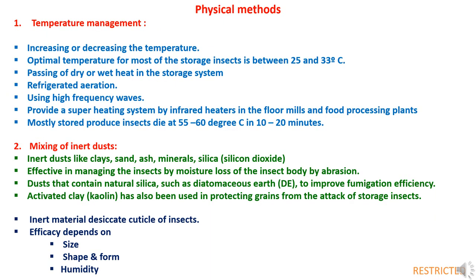The next method is physical methods, of which there are several types. First is temperature management — increasing or decreasing temperature can alter insect growth and metabolism. The optimal temperature for most storage insects is between 25 to 33°C. Deviations from this range will slow down growth and eventually lead to death. Passing dry or wet heat in the storage system or refrigerated aeration yields better results. High-frequency waves and infrared heaters in flour mills and food processing plants can provide superheating. Most stored pest insects die at 55 to 60°C in 10 to 20 minutes.